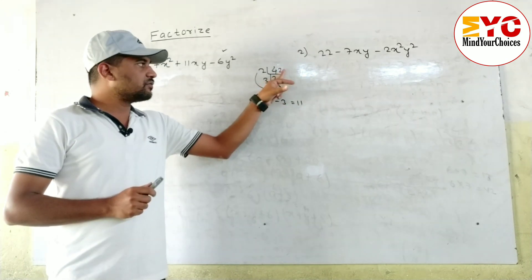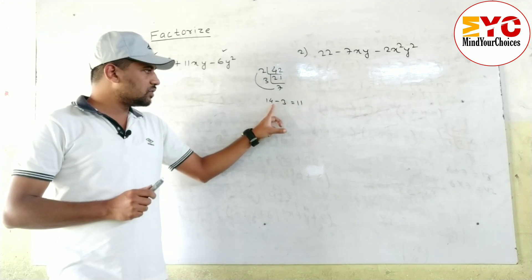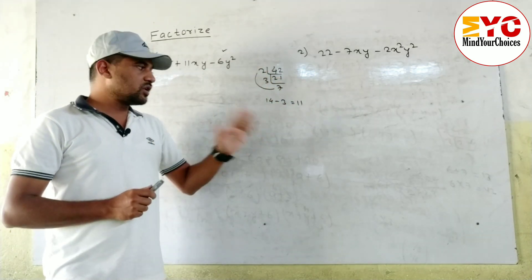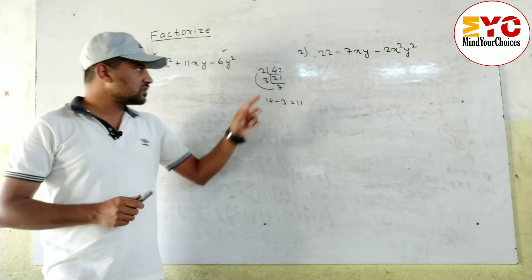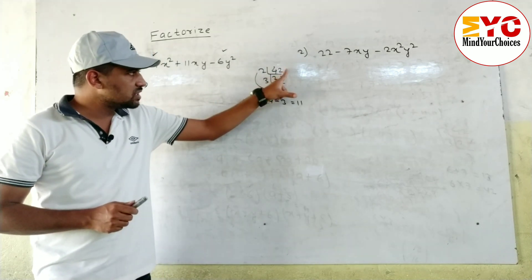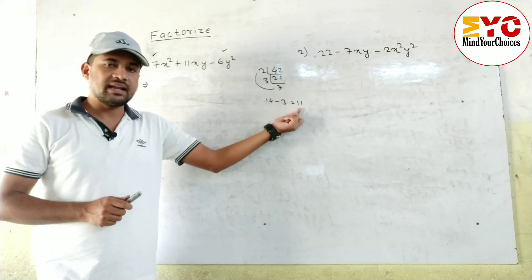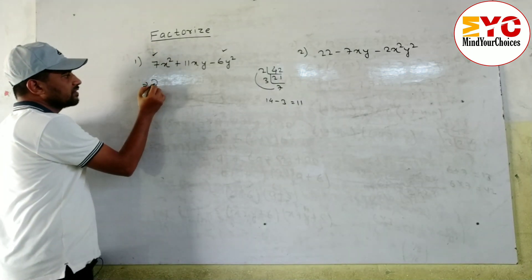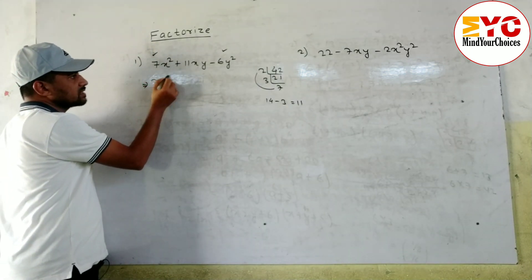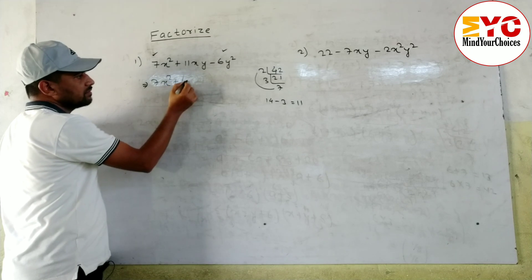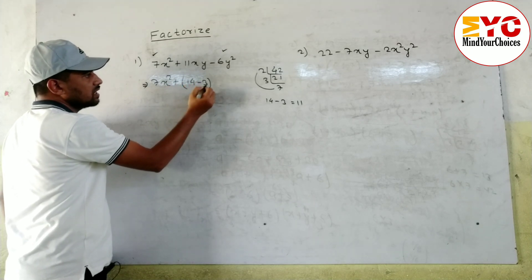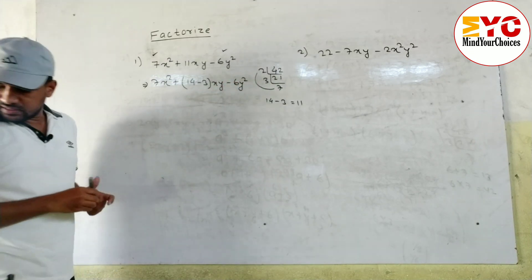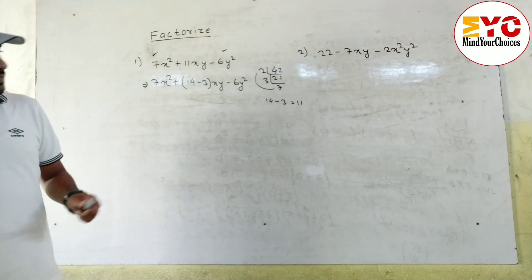We have found the factors: 14 and 3. So we can write: 7x² + (14 - 3)xy - 6y². In the place of 11, we write 14 minus 3. So it becomes 7x² + 14xy - 3xy - 6y².